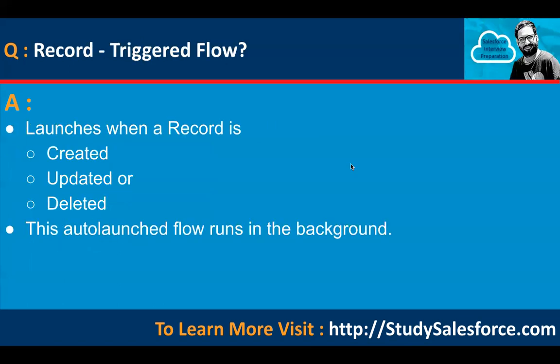Then we have record triggered flow. It launches when a record is created, updated, or deleted — this auto-launched flow runs in the background. Whenever you create a new record, update an existing record, or delete an existing record, this record triggered flow runs automatically.